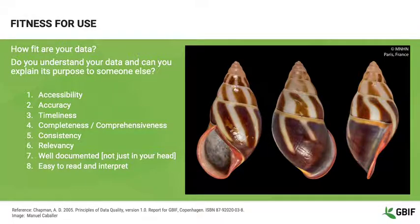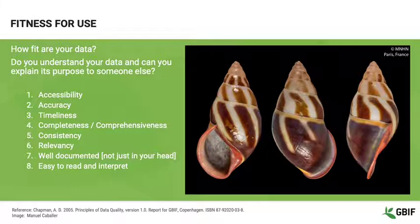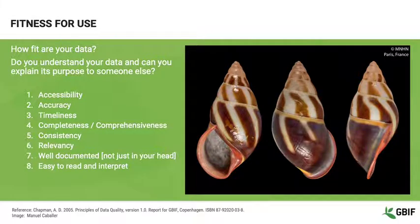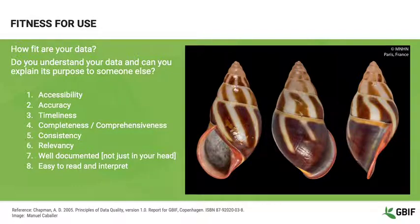When Chapman discusses fitness for use, he says that once a dataset has been created and shared, there are two primary perspectives on how these data might be used: the perspective of the creator and the perspective of the user. To help somebody to decide if your data is trustworthy or useful enough for them to use, you have to understand your data and how to convey those data to the potential user. These are some of the important questions about the metadata or characteristics of your data that you should be able to answer and share with others.